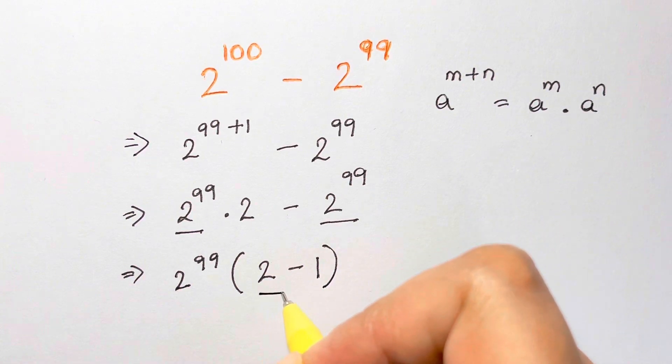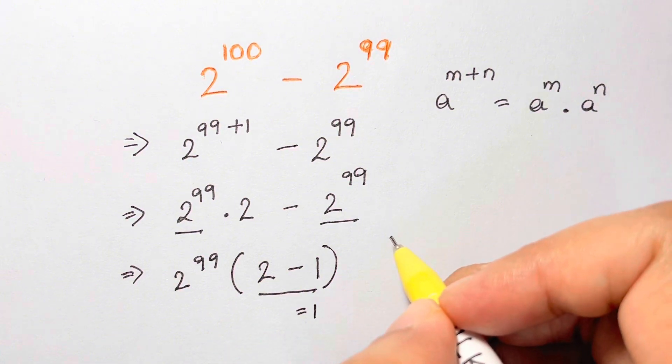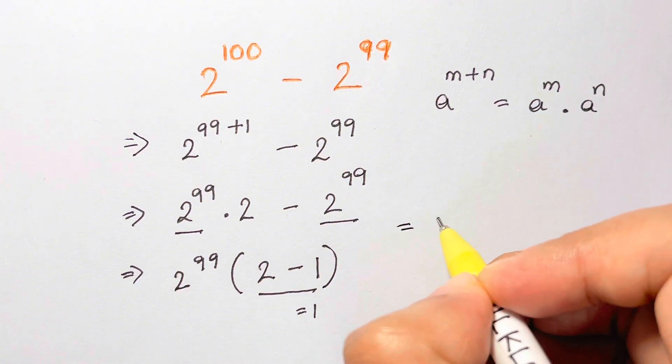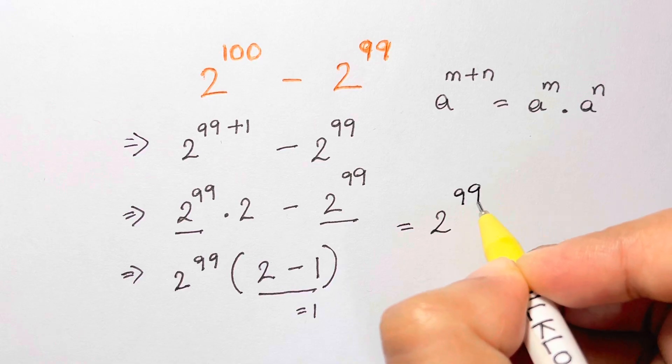So you have 2 minus 1 here, which is equal to 1. So your answer here is 2 to the power of 99.